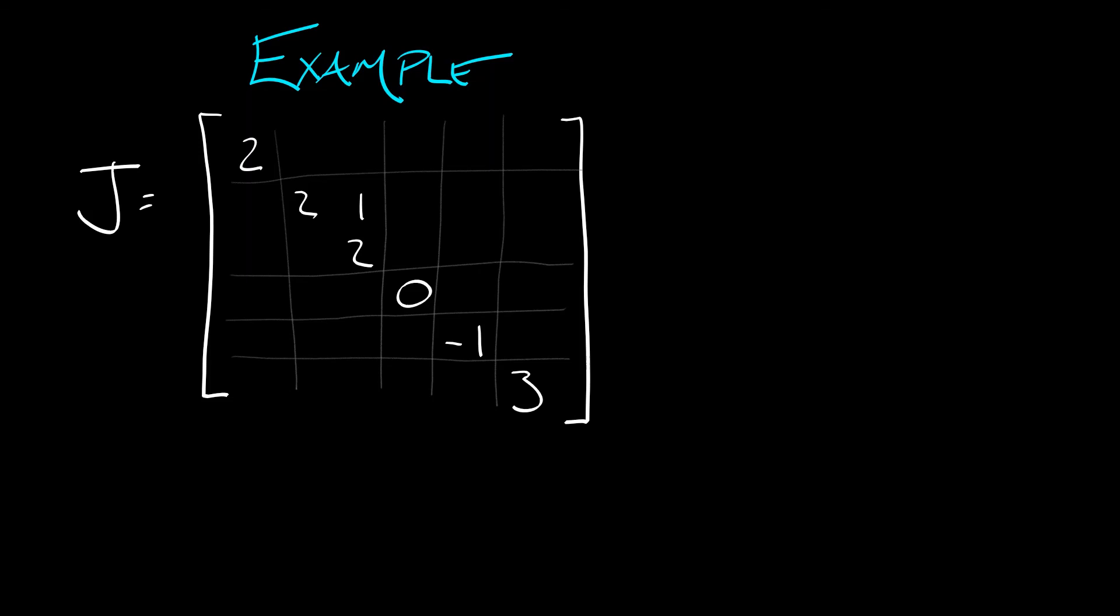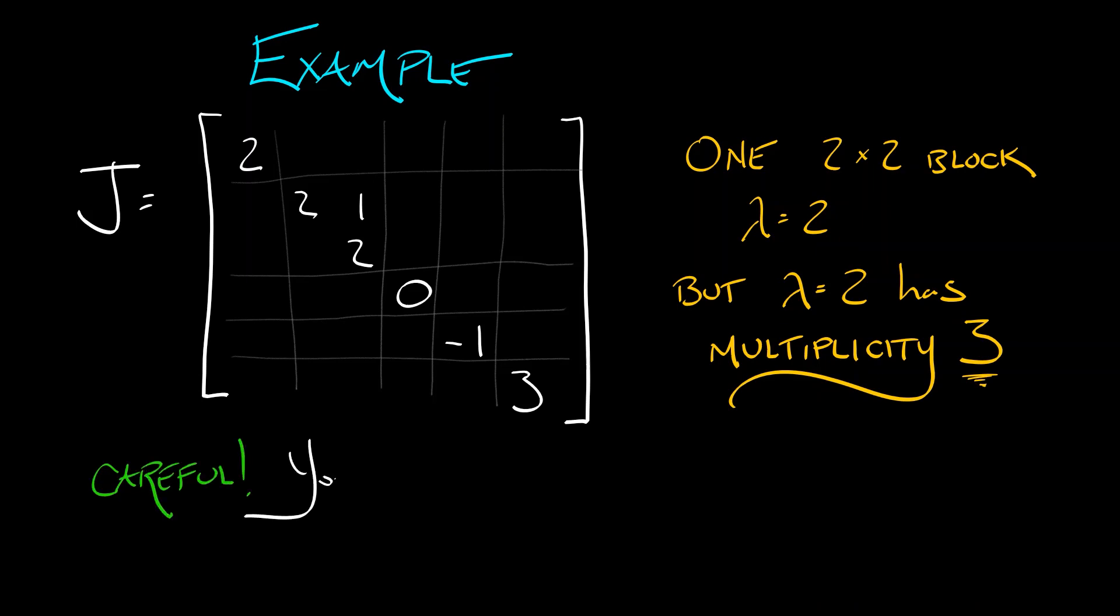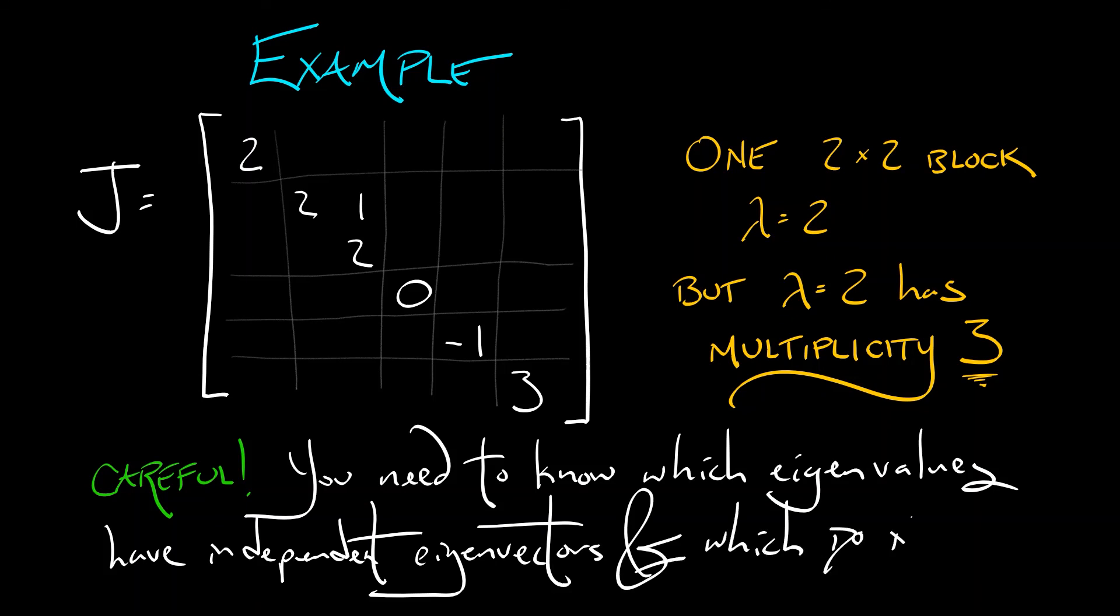That's allowed if you have an independent eigenvalue with an independent eigenvector, but I've got one 2×2 block: [2,1; 0,2]. So 2 is along the diagonal, 1 on the super-diagonal. Notice the eigenvalue in that 2×2 block equals 2, the same as the previous block. So eigenvalue λ=2 has multiplicity 3, but there are only two independent eigenvectors. One goes with the first block, the second with this pair. This is why you have to be careful—you need to know which eigenvalues have independent eigenvectors, and that determines the block structure.